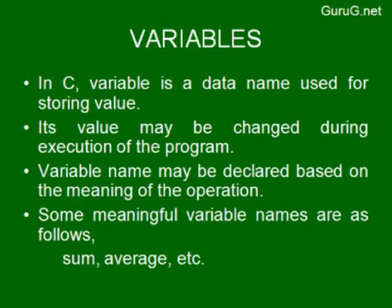In C, a variable is a data name used for storing values. Its value may be changed during execution of a program. For each and every variable, we give a name, and that name should have some meaning for that particular variable. For example, if you are going to sum two numbers, then the value of the sum will be stored in a variable named 'sum'.